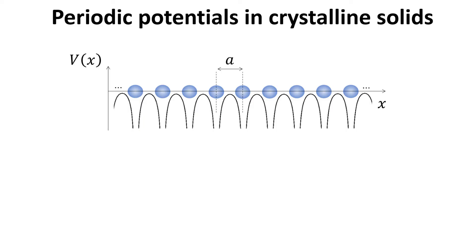We begin by analyzing the periodic potential in a crystal. The regularly distributed ions making up the crystal lattice exert Coulomb attraction on the valence electrons. Hence, electrons traveling through a crystal are subjected to a spatially periodic potential. The figure above shows an example of a periodic potential with period A, the lattice constant, for a hypothetical one-dimensional crystal that we assume throughout the video to simplify the analysis.